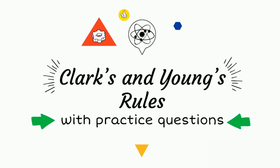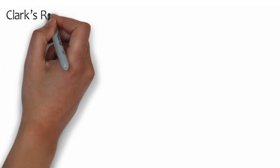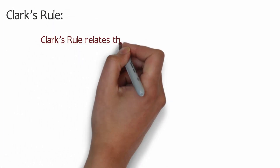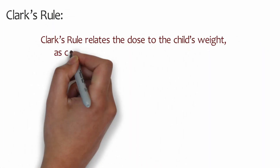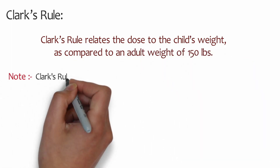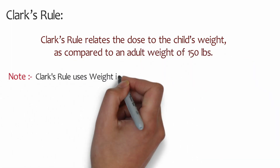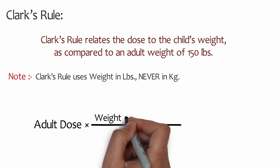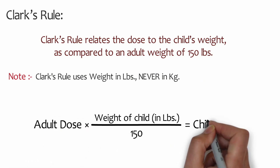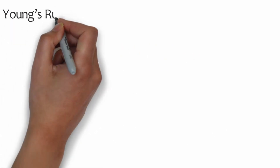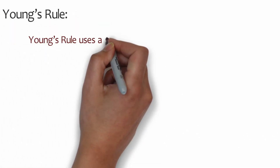Clark's Rule: Clark's Rule relates the dose of a child's weight as compared to an adult weight of 150 pounds. Note that Clark's Rule uses weight in pounds, never in kilograms. The formula is: adult dose times weight of child divided by 150 equals child's dose.